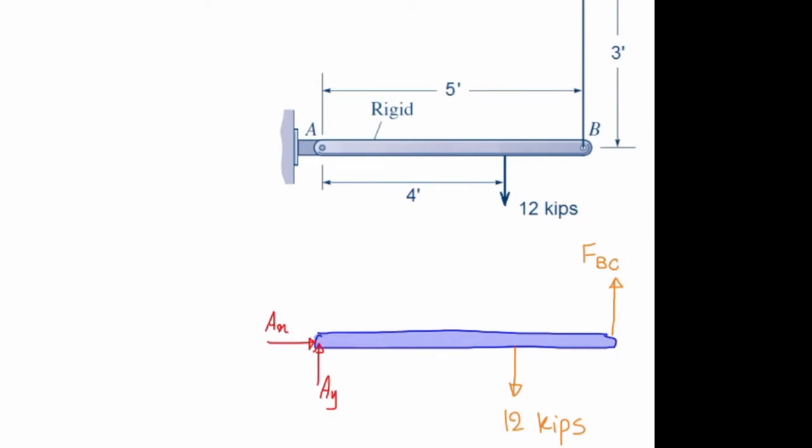So I have three unknowns here. And how many equations do I have? Can I determine these unknown forces by equilibrium equations? How many equilibrium equations in general do I have here? Three. The first is sum of the forces in the x direction. Second, sum of the forces in the y direction. And the last one is sum of the moments.